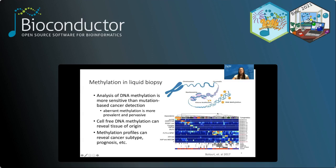One thing we in particular look for in liquid biopsies is DNA methylation. DNA methylation is a chemical modification that serves to repress gene activity — genes that are highly methylated are being repressed and not actively transcribed. This is important because in cancer, methylation is frequently dysregulated. Methylation can also reveal the tissue of origin, allowing the cfDNA to indicate where in the body the tumor is located. Different methylation profiles can reveal the cancer subtype, prognosis, and other factors. For example, Valeri et al. 2017 profiled acute myeloid leukemia patients based on methylation signatures, finding they correspond well to leukemia subtypes based on genetic mutations.